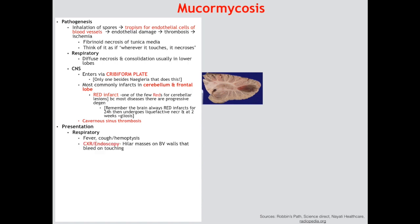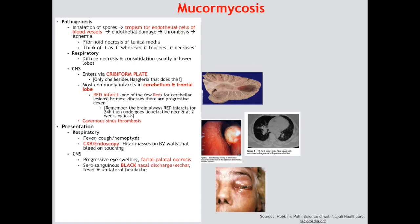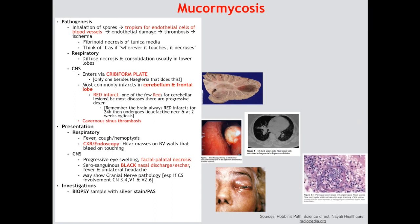The clinical presentation in the lung: fever, cough, and hemoptysis. Diagnosis is on chest X-ray or endoscopy where you will see hilar lesions of the blood vessels that bleed on touching. The more common CNS presentation starts with progressive eye swelling and quickly turns into facial and palatal necrosis with a serosanguinous black discharge from the nose as well as unilateral headache. If the cavernous sinus is involved you can see cranial nerve pathologies in cranial nerves 3, 4, V1 and V2 of trigeminal, and abducens. Confirmation is on tissue biopsy where you would see wide right-angle branching with no septated hyphae.